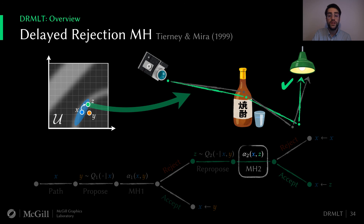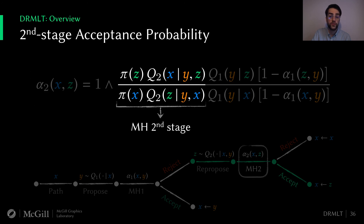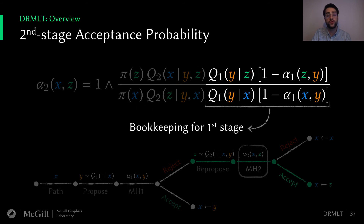What we're really interested in here is the second MH step that determines the acceptance probability of moving from x to z. If we look at this in more detail, we get a daunting equation that is actually quite easy to understand. On the left, we have a simple MH criterion to support the second stage — this is what you're used to if you drop the condition on y, and when q2 is symmetric, the second half just becomes 1. We also have some extra bookkeeping to account for the first stage rejection: a kernel ratio times the probability of rejecting the first stage.